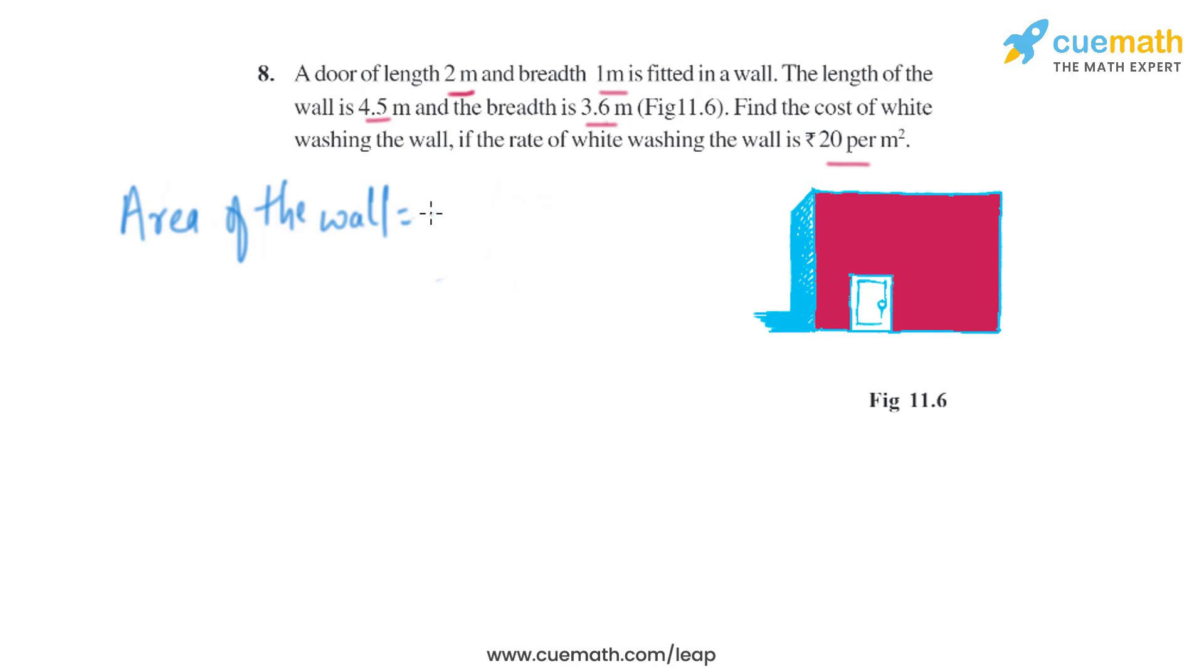Let's start by finding the area of the wall. As it is rectangular, it's L times B. The length is 4.5 meters and breadth is 3.6 meters, so we can easily find the area of the wall: 16.2 square meters.